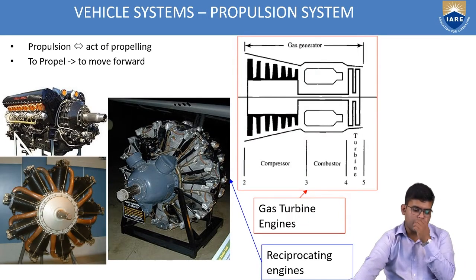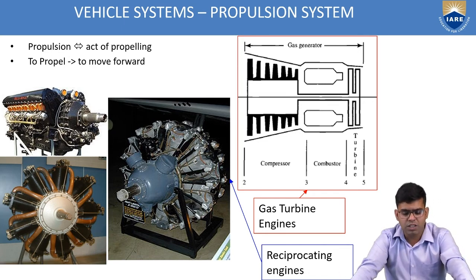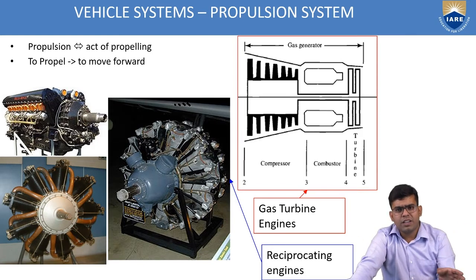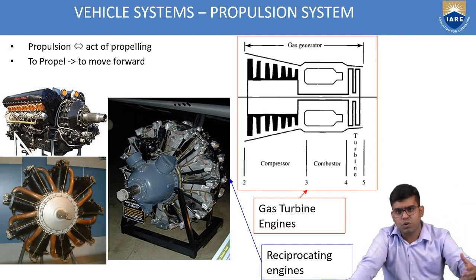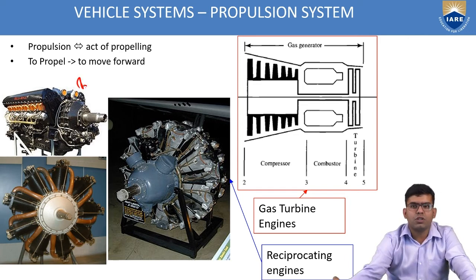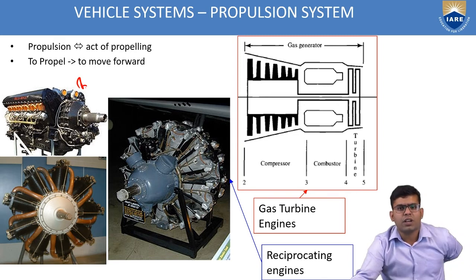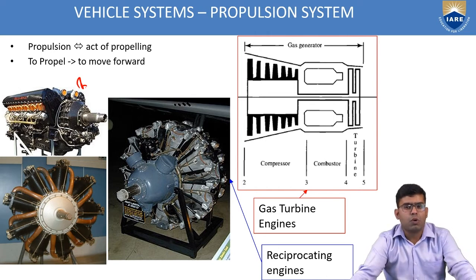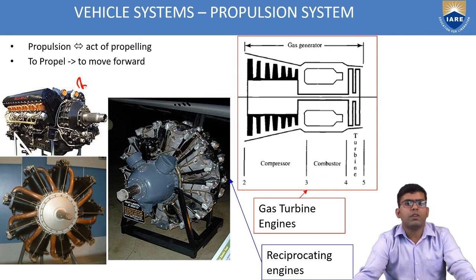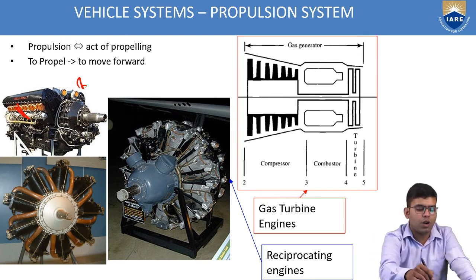The next system is propulsion. Propulsion is the act of propelling — that means moving forward. The images shown represent the age-old systems used during World War 1 and World War 2. The first type is reciprocating engines. The first shown is a V engine, also commonly used in vehicles like Audis, Mustangs, and other muscle cars. In a V engine, pistons move up and down, turning the crankshaft, which in turn rotates the shaft connected to the propeller.